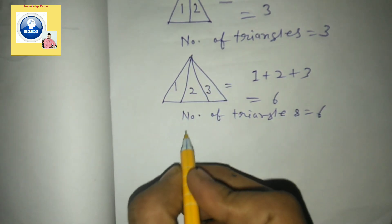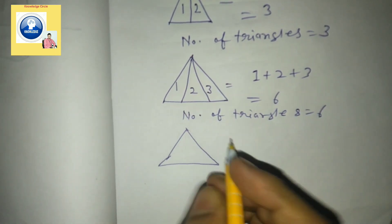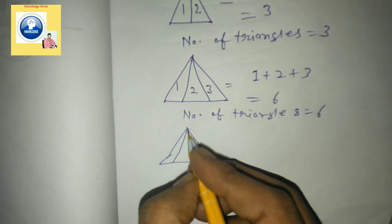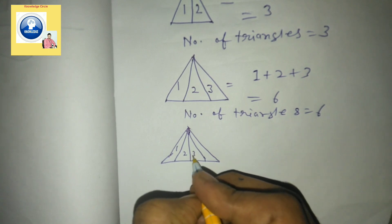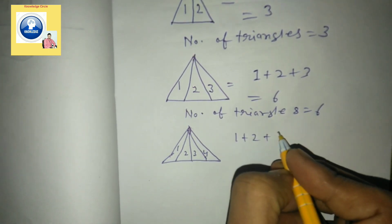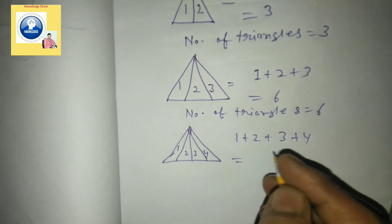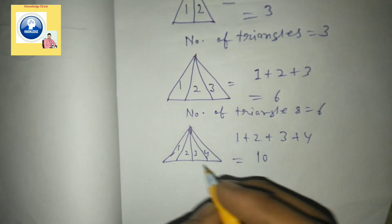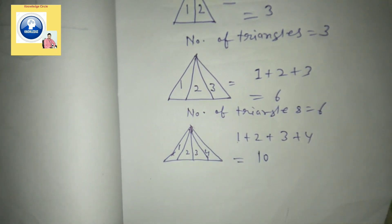Let's see the next figure. Here the triangle is divided into four parts: one, two, three, four. Add them: one plus two plus three plus four. That gives one plus two equals three, three plus three equals six, six plus four equals ten. So the number of triangles in this figure is ten.